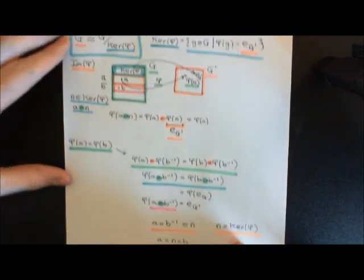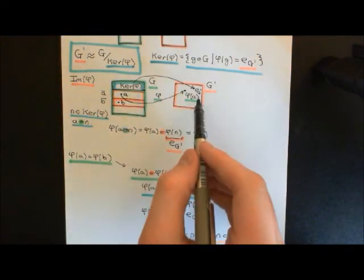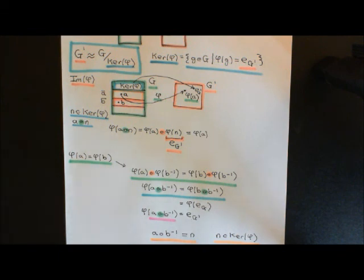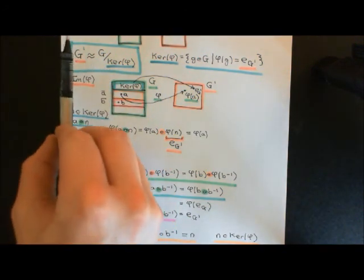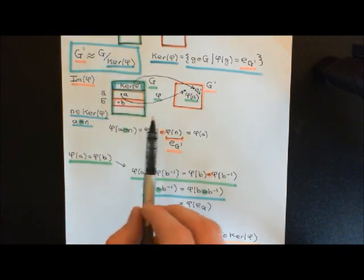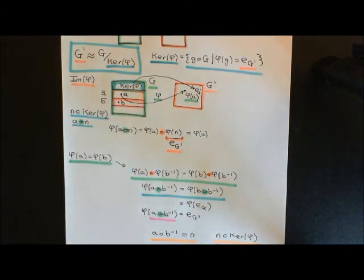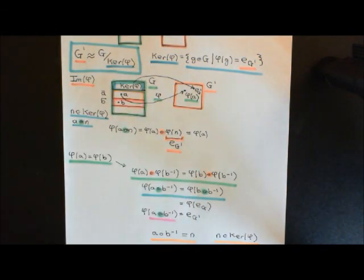By assuming phi of a equals phi of b, I've proven that a and b could not be in separate cosets — they must be in the same coset. So if a and b are not in the same coset, phi of a cannot equal phi of b. This gives us an improved understanding of homomorphisms: elements in different cosets of the kernel are mapped onto different elements in the codomain group. In the next video we'll use this insight to establish an isomorphism and prove the first isomorphism theorem.